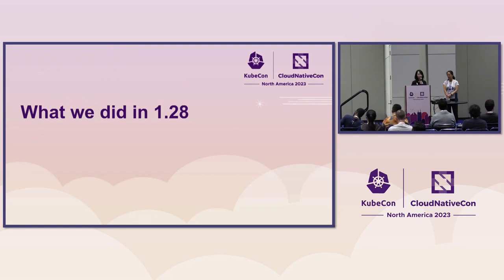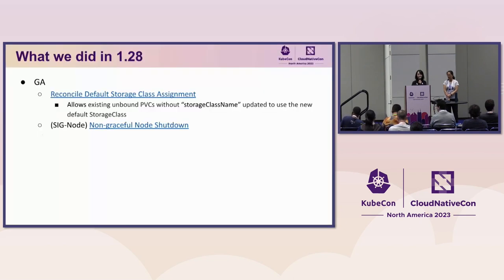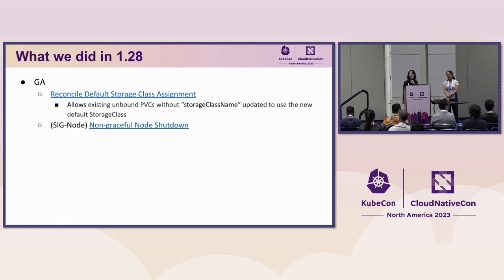Now let me talk about what we did in 1.28. We have two GA features in the 1.28 release. The first one is the reconciled default storage class assignment. This allows an existing unbound PVC that does not have a storage class name set to be updated later to use a new default storage class when that becomes available.